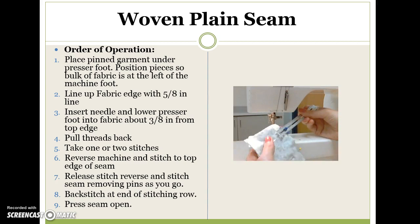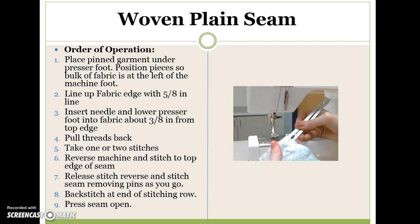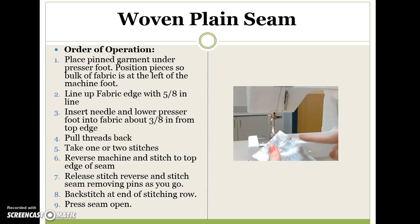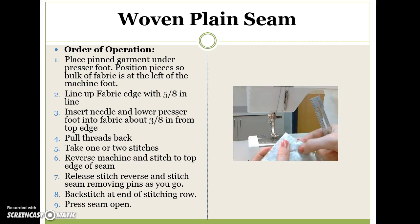I am going to show you with the seam gauge. Each of these little black lines is an eighth of an inch. Five eighths of an inch is the most common seam allowance that you are going to use. I have these pins so they go down below where that seam will be and come up on the other side, so the fabric does not move as much in that area.